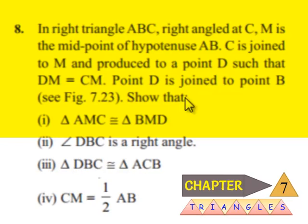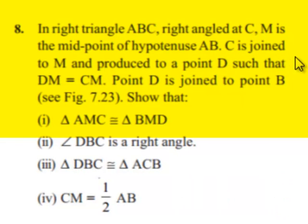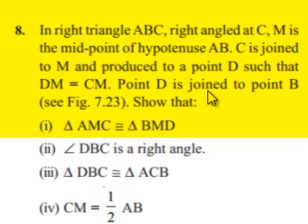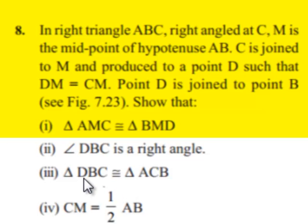Moving on to the 8th question: In right triangle ABC, with right angle at C, M is the midpoint of hypotenuse AB. C is joined to M and produced to point D such that DM is equal to CM. Point D is joined to point B. Then show that: (1) Triangle AMC is congruent to triangle BMD, (2) angle DBC is a right angle, (3) triangle DBC is congruent to triangle ACB, and (4) CM is equal to half of AB.